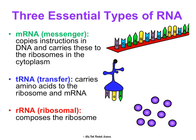rRNA stands for ribosomal RNA. It just makes up ribosomes — ribosomes are made of protein and rRNA. This is what the nucleolus inside the nucleus makes. So the nucleolus makes rRNA, which in turn makes up ribosomes. All three types of RNA are important for understanding protein synthesis.